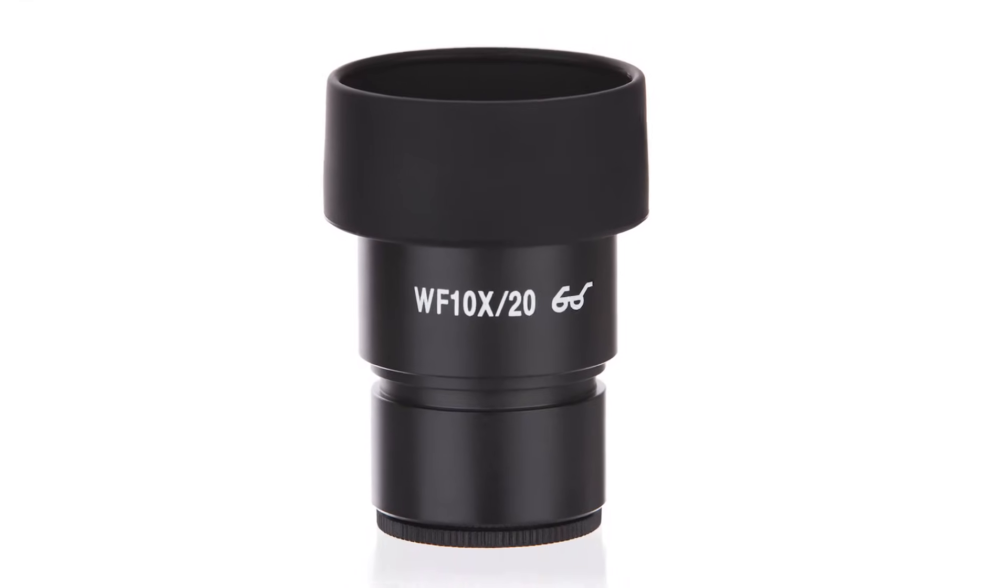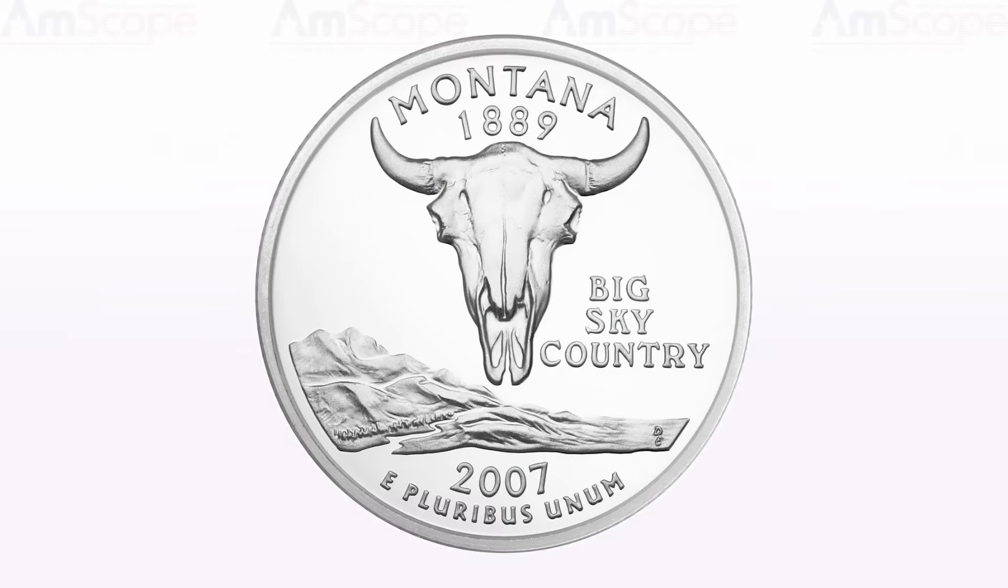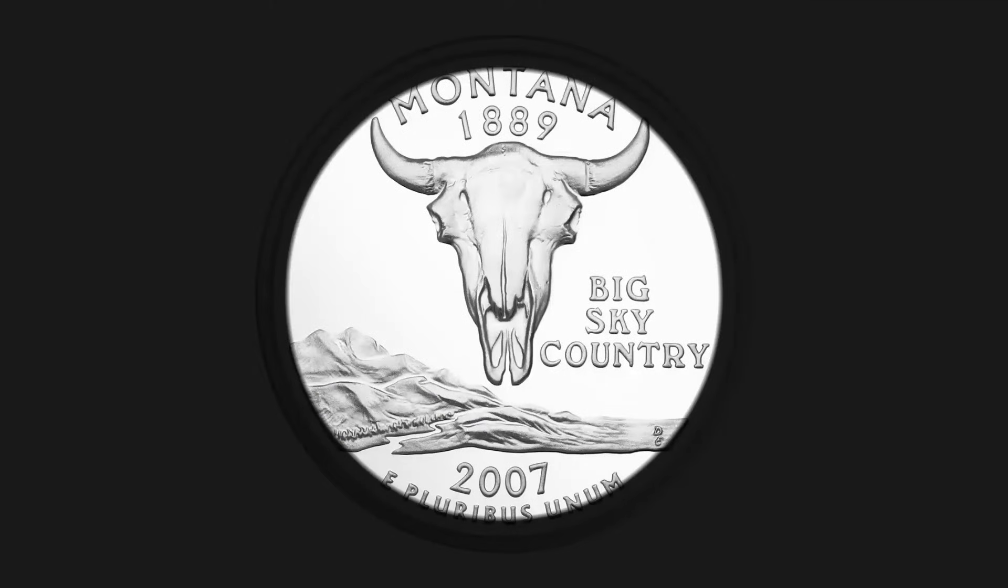Your eyepieces will be marked with two numbers. The first is the eyepiece's magnification. The second is the field number, which represents the eyepieces' field of view in millimeters. In cases where the objective lens produces an image circle smaller than the eyepiece's field number, that image circle would be the field of view.